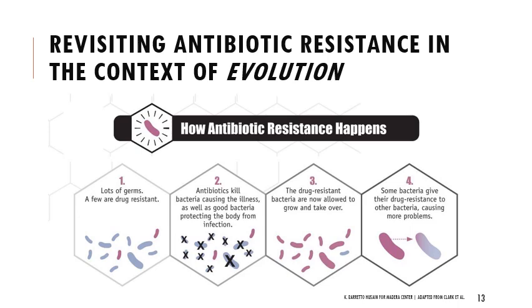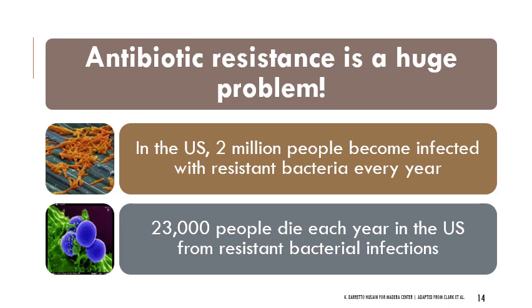Just to visualize antibiotic resistance: there are lots of bacteria, only a few are drug resistant. We take antibiotics, they kill the bacteria causing the illness as well as some good bacteria, but the resistant ones — maybe they don't have the enzyme being targeted, maybe it's slightly different — survive and take over. They can also pass on antibiotic resistance to other bacteria. About 2 million people every year become infected with resistant bacteria and 23,000 people die from these infections, making it especially serious for immunocompromised patients.